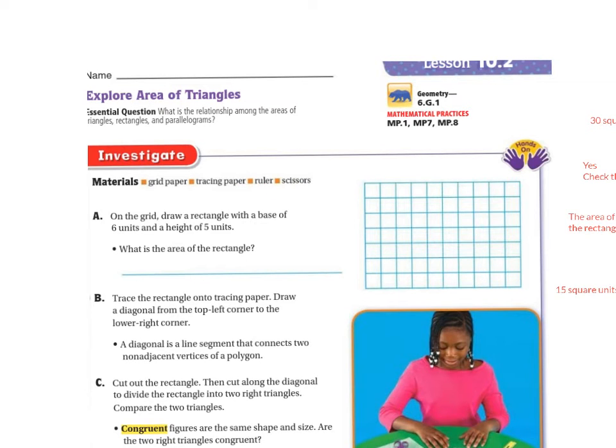You can just use this square if you would like in your book. On the grid, we're going to draw a rectangle with a base of six units and a height of five units. So we're going to go 1, 2, 3, 4, 5, 6 is my base, and my height is five units.